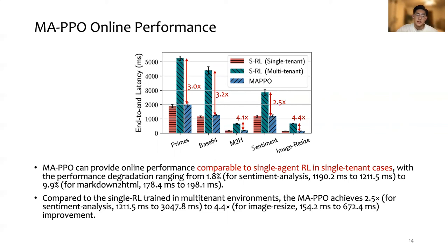Compared to single agent RL training multi-tenant environments, the MA-PPO achieved 2.5 times to 4.4 times improvement in terms of the function end-to-end latency.